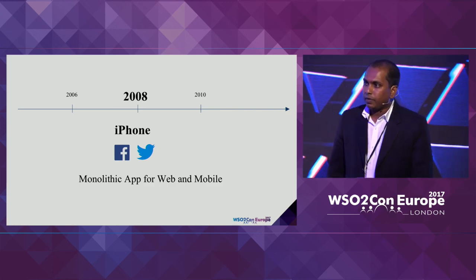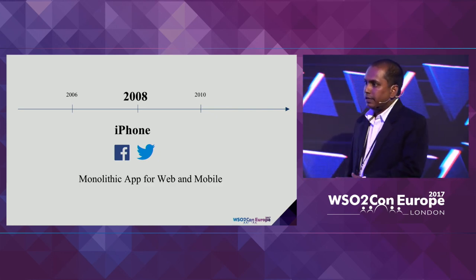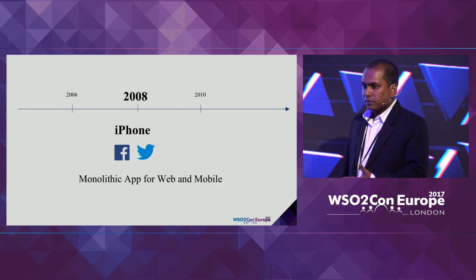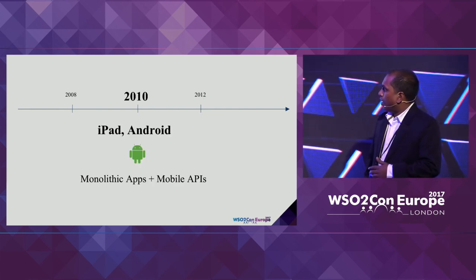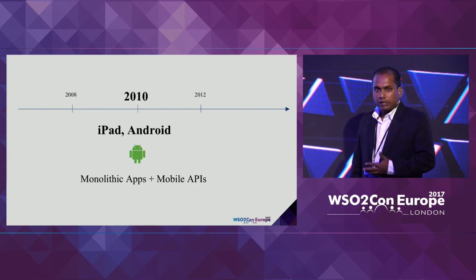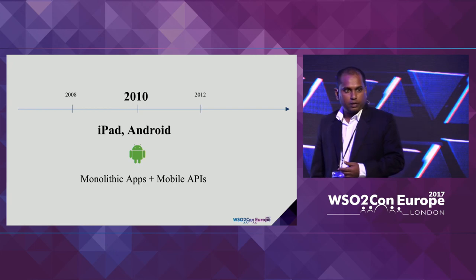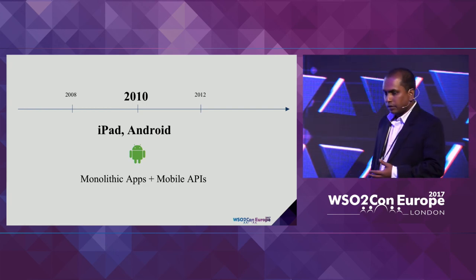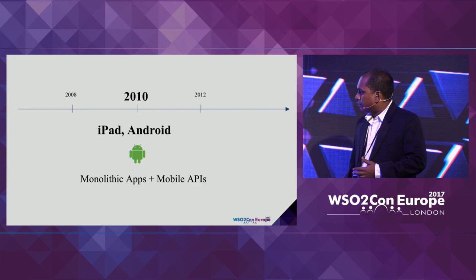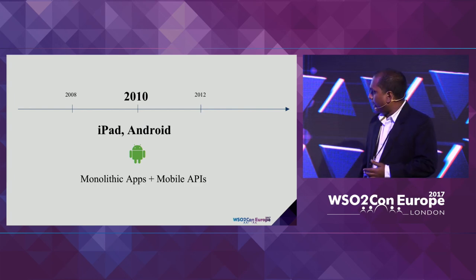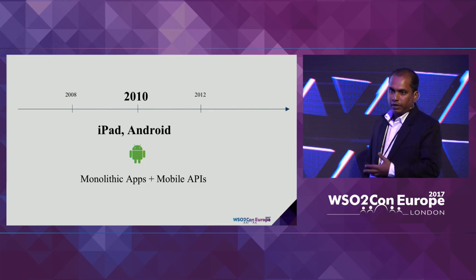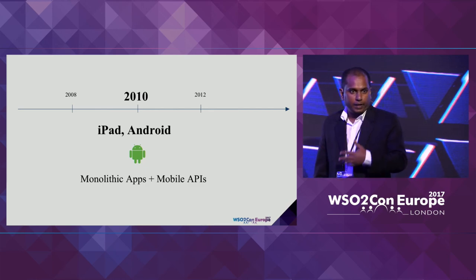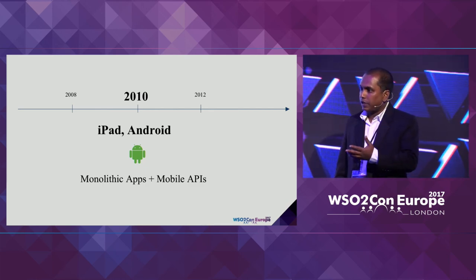If you look at the application domain in this era, monolithic applications for the web and mobile were dominating the industry. Somewhere in 2010, iPad and Android were introduced. If you look at the application domain, mainly monolithic apps — but also mobile APIs, because of smartphone popularity, people were using more applications, and to do that we used mobile APIs.